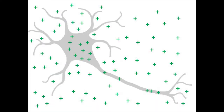Neurons are surrounded by and filled with ions, which are charged particles. At rest, there is a regulated balance of positively charged ions inside and outside of the neuron. This balance is carefully maintained by proteins in the membrane of the neuron, and as a result, there are more positively charged ions outside the neuron than inside.